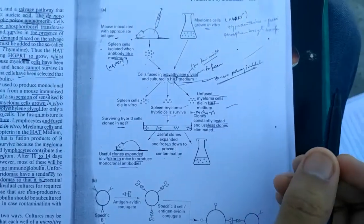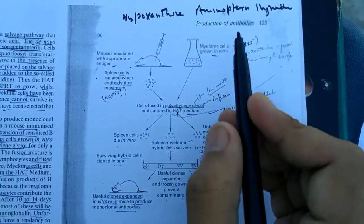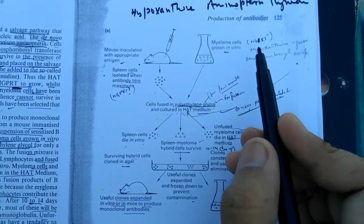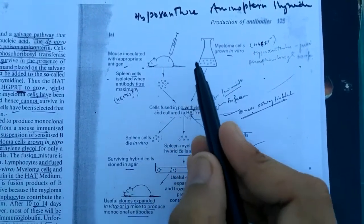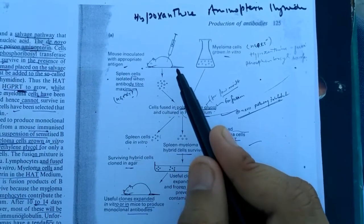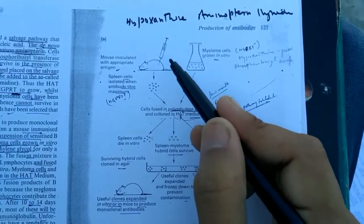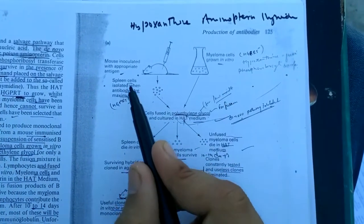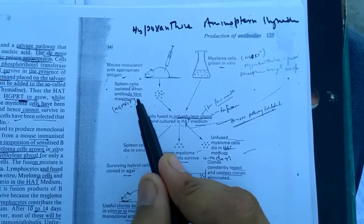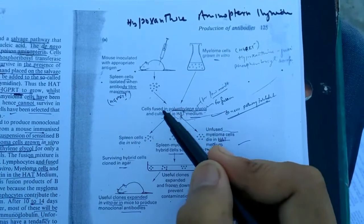Have a look at this diagram. This is experimental production of monoclonal antibodies. Here the mouse is inoculated with an antigen. The antigen will evoke the immune system. Spleen cells isolated when antibody titer is maximum.